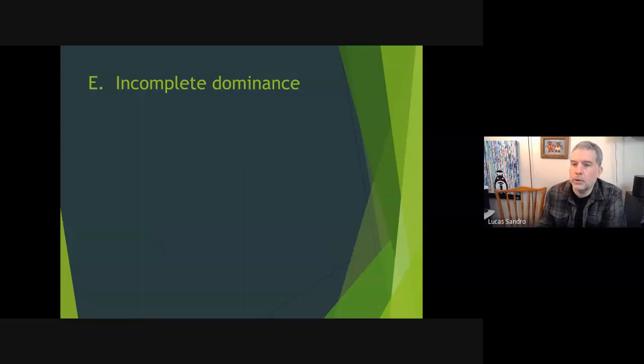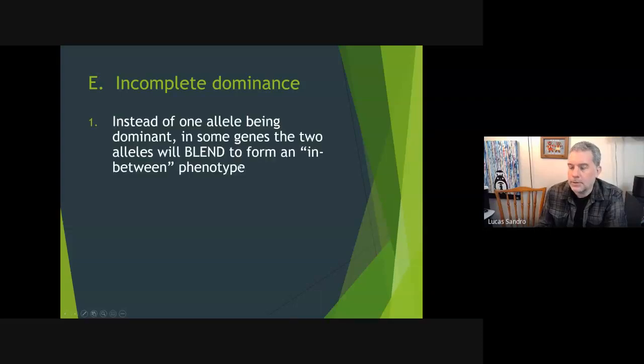Incomplete dominance, not to be confused with codominance - slightly different patterns. The basic way we're going to know it this year is as follows: instead of one allele being dominant, similarly to codominance, they both are. But you don't see them separately. In a heterozygote you don't see both alleles' identities separately - you see a blend.